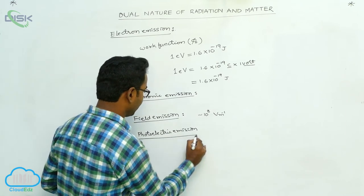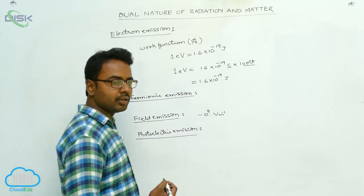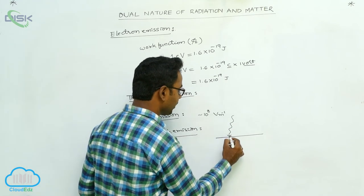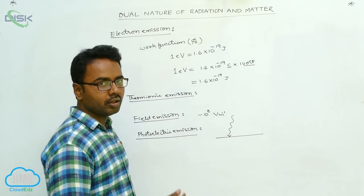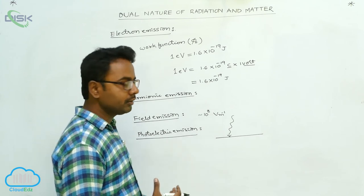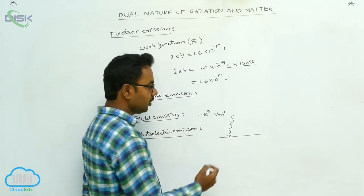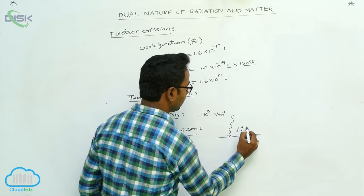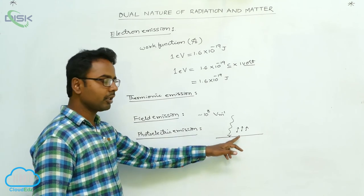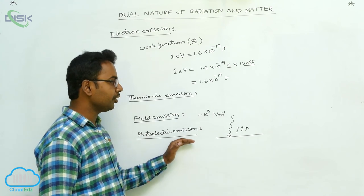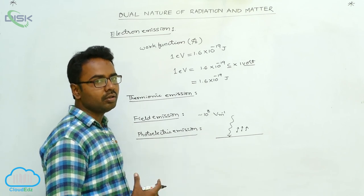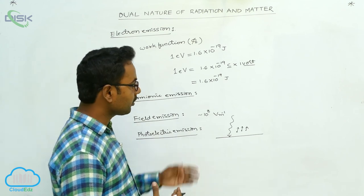Photoelectric emission: when a metal surface is illuminated — that is, exposed to light or an electromagnetic wave of suitable frequency — electrons are emitted from the metal surface. This phenomenon is called photoelectric emission, and the electrons emitted in this phenomenon are called photoelectrons. So photoelectric emission is the phenomenon of emission of electrons when a metal surface is exposed to light or electromagnetic radiation of a suitable frequency.